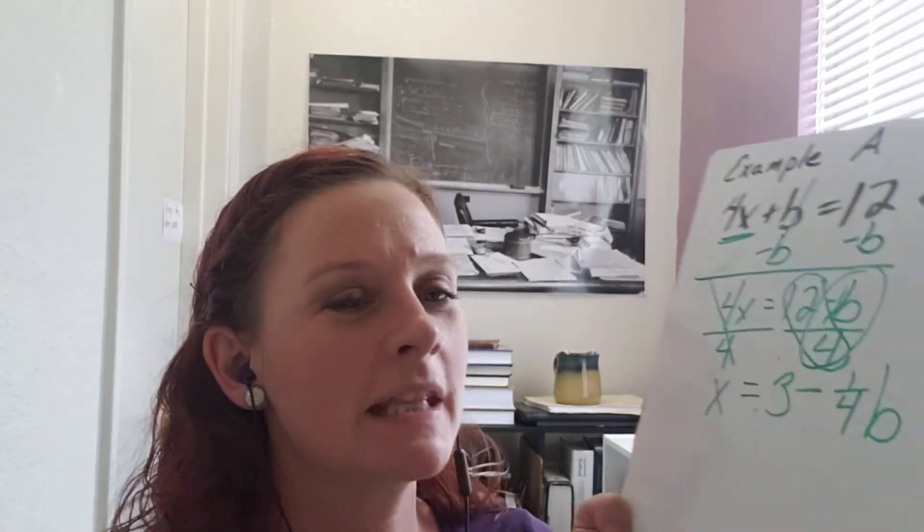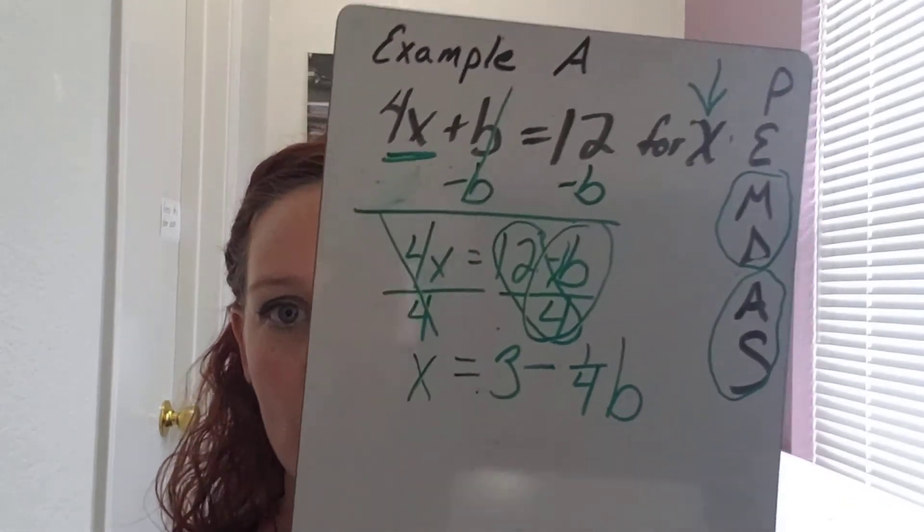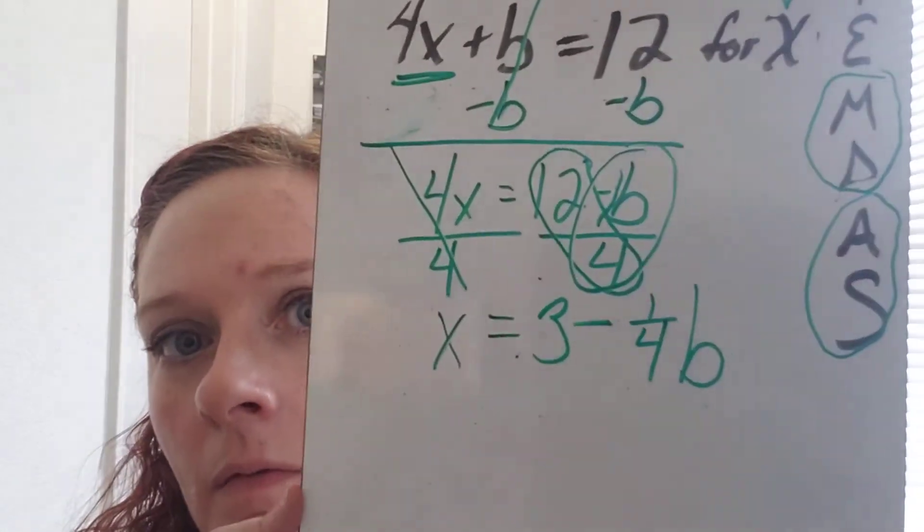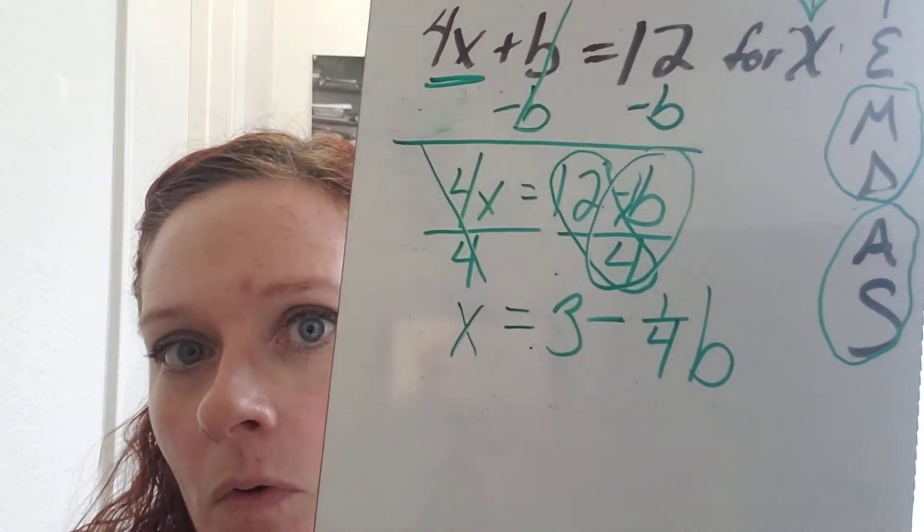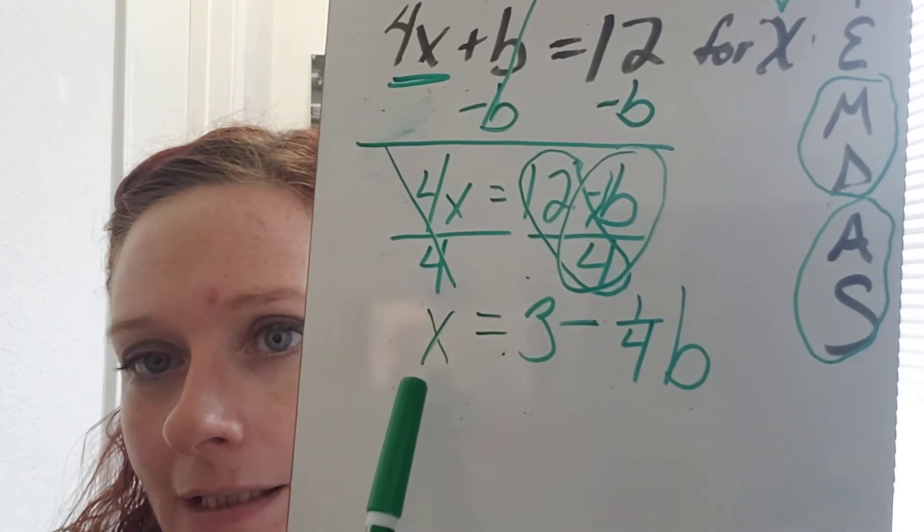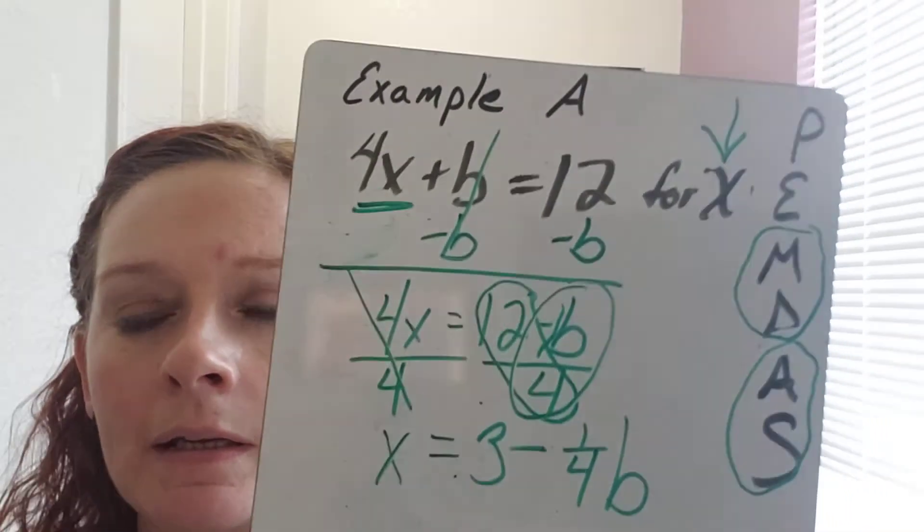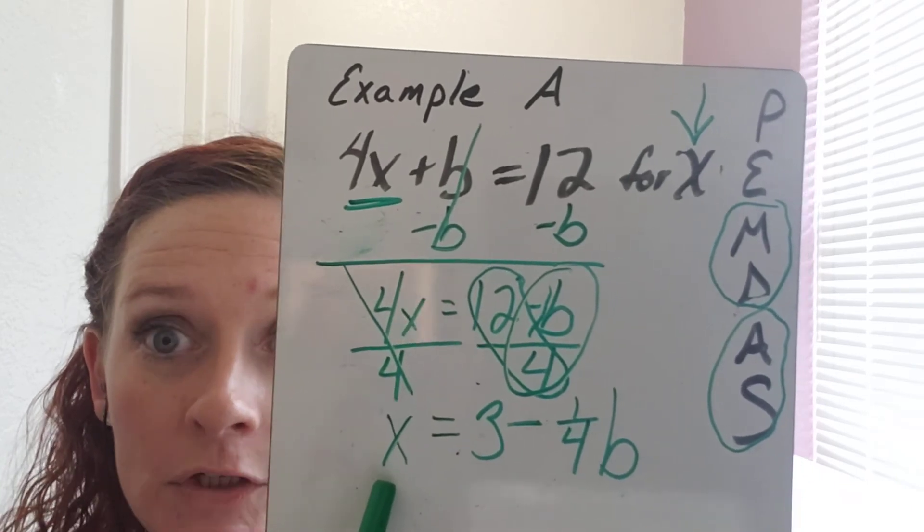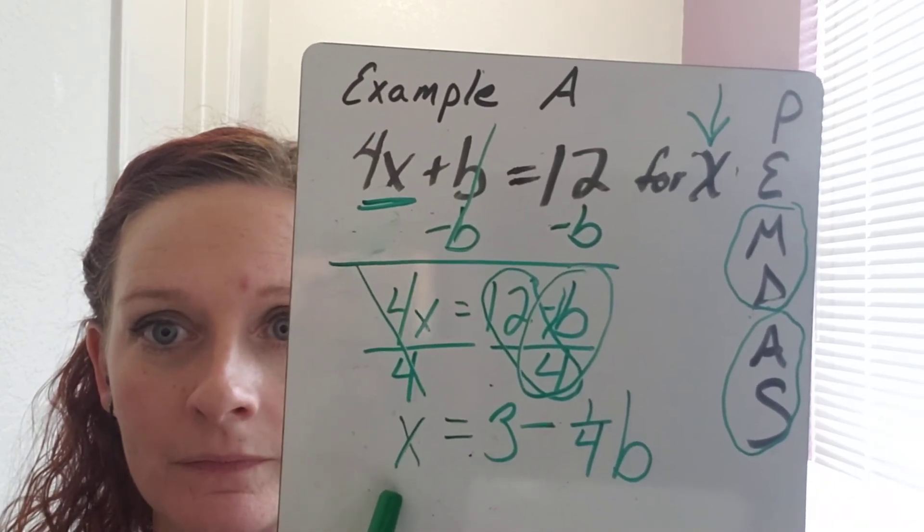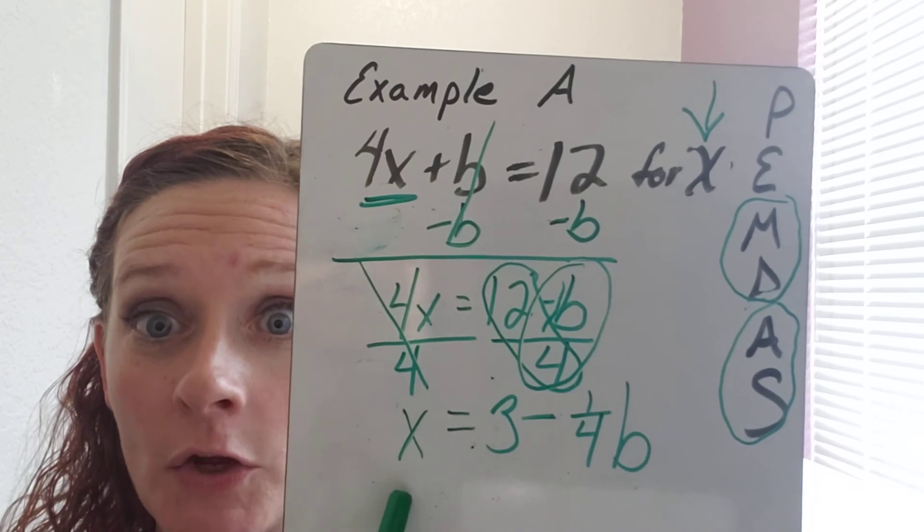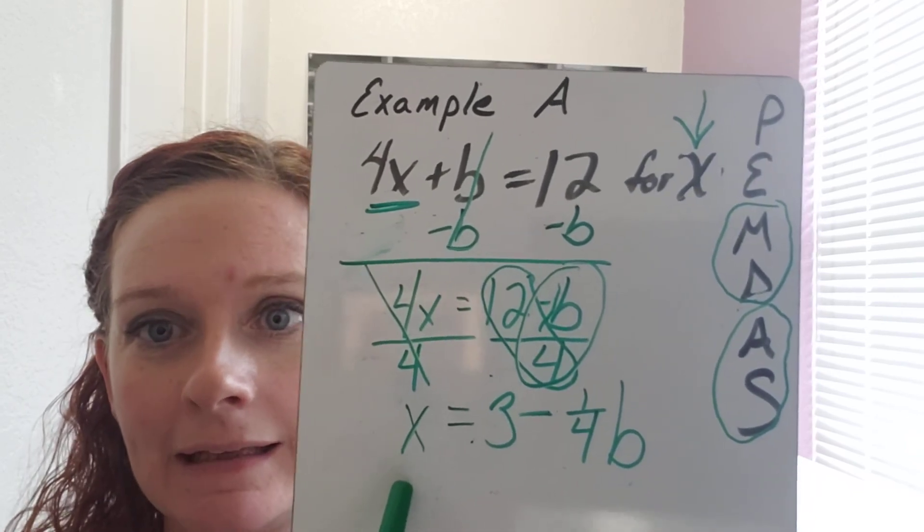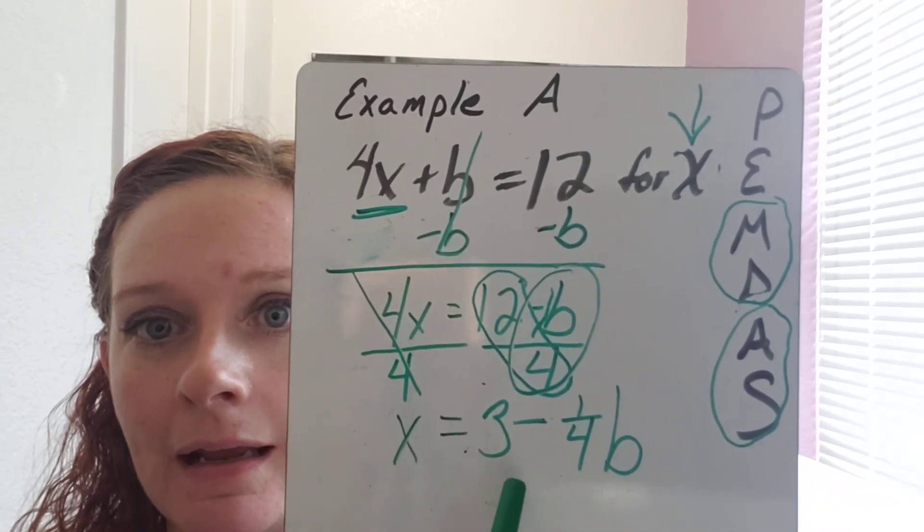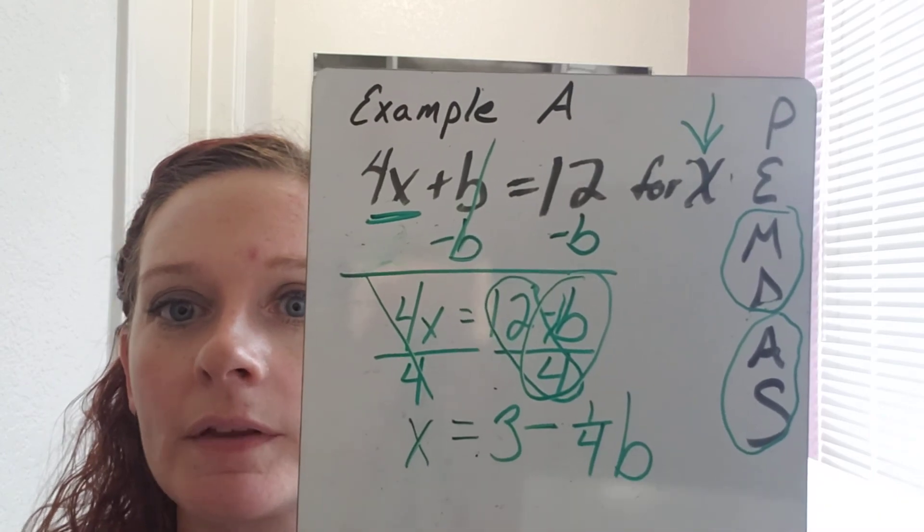What's left? The B. Now we are trying to isolate the X. Is the X isolated? How do you know? That's right. Because the X is alone. We have isolated the X. It equals 3 minus 1 fourth B.